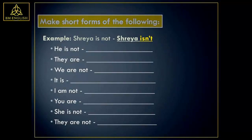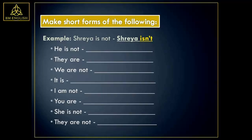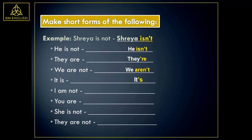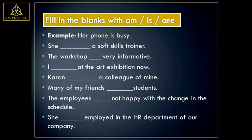Let's make short forms of the following. Example: Shreya is not — Shreya isn't. He is not — he isn't. They are — they are. We are not — we aren't. You are not — you aren't. It is — it's. I am not — I'm not. You are — you are. She is not — she isn't. They are not — they aren't. I am — I'm.